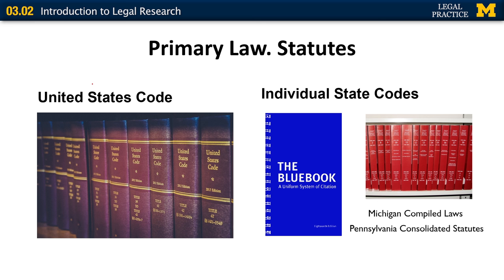Primary law — your statutes, regulations, constitution, and case law — they are the law. For federal statutes, they are collected in the United States Code, or the USC, a multi-volume collection of federal statutes arranged by subject matter. Each state also has its own collection of statutes with varying titles, such as the Michigan Compiled Laws or the Pennsylvania Consolidated Statutes. To determine the name of a particular state's statute collection, you can look in the Blue Book — the blue-tipped pages have a page or two devoted to every state, including the name of the state code collection.